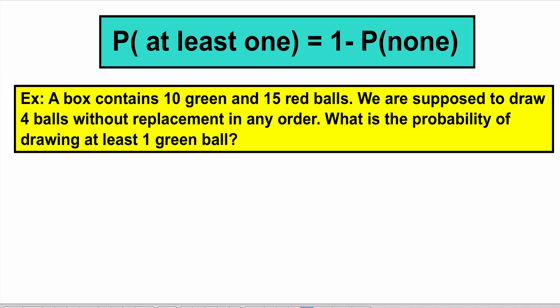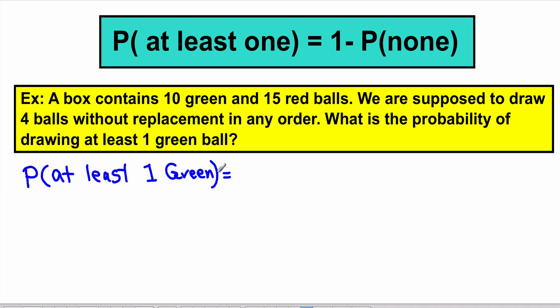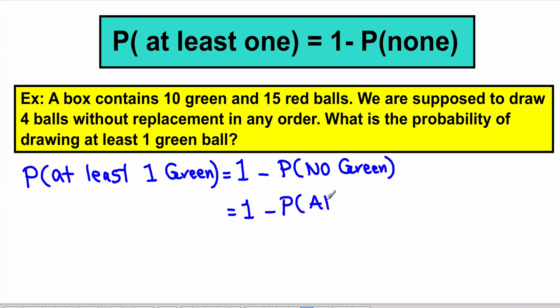Now let's take a look at our second example. We're going to draw four balls, and the question asks what's the probability of having at least one green ball. The key word again is 'at least,' so: probability of at least one green ball equals one minus the probability of none, which is one minus the probability of no green ball — that is, all red balls.